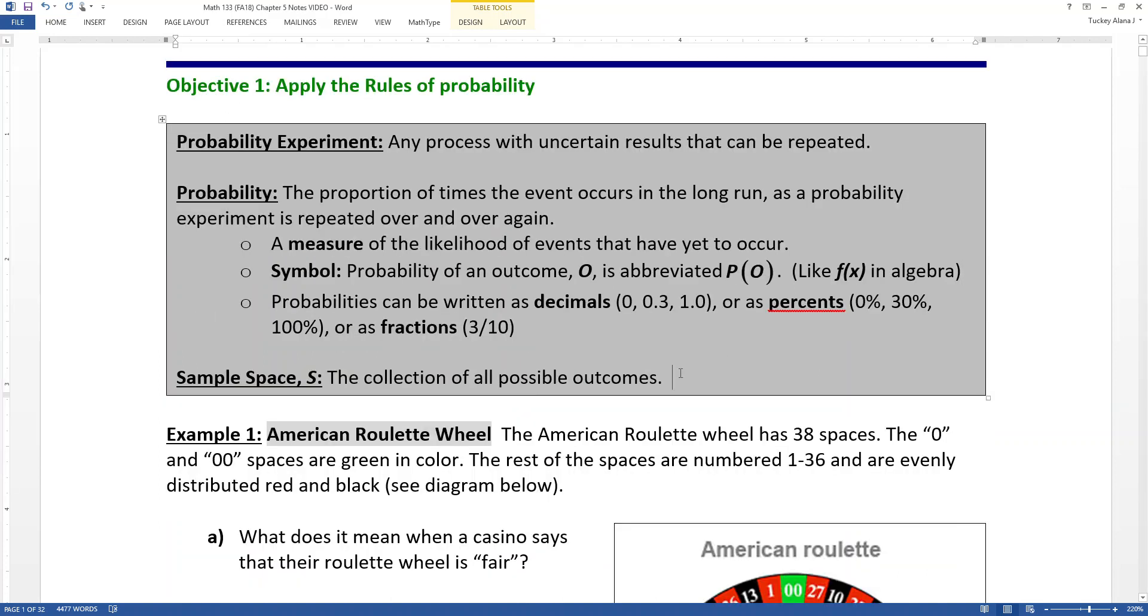The sample space is the collection of all possible outcomes. Now, collection is a fancy name for list. That's what we mean. So you make a list of all your possible outcomes. Often, because it's a mathematical list, you'll actually put the list in those curly bracket things. So those get used a lot for the sample space.